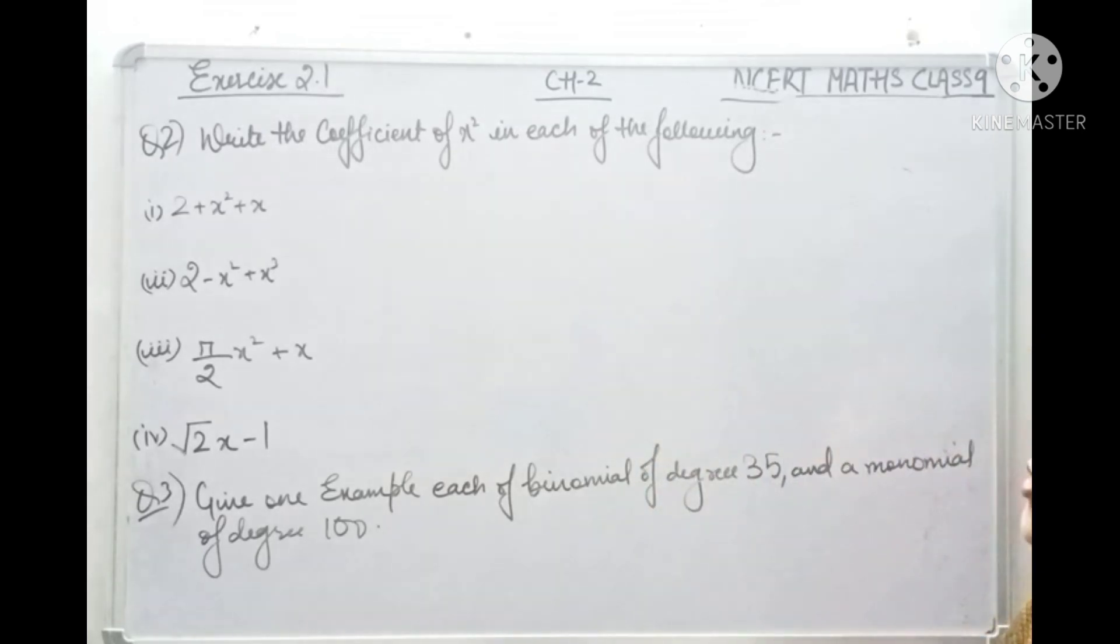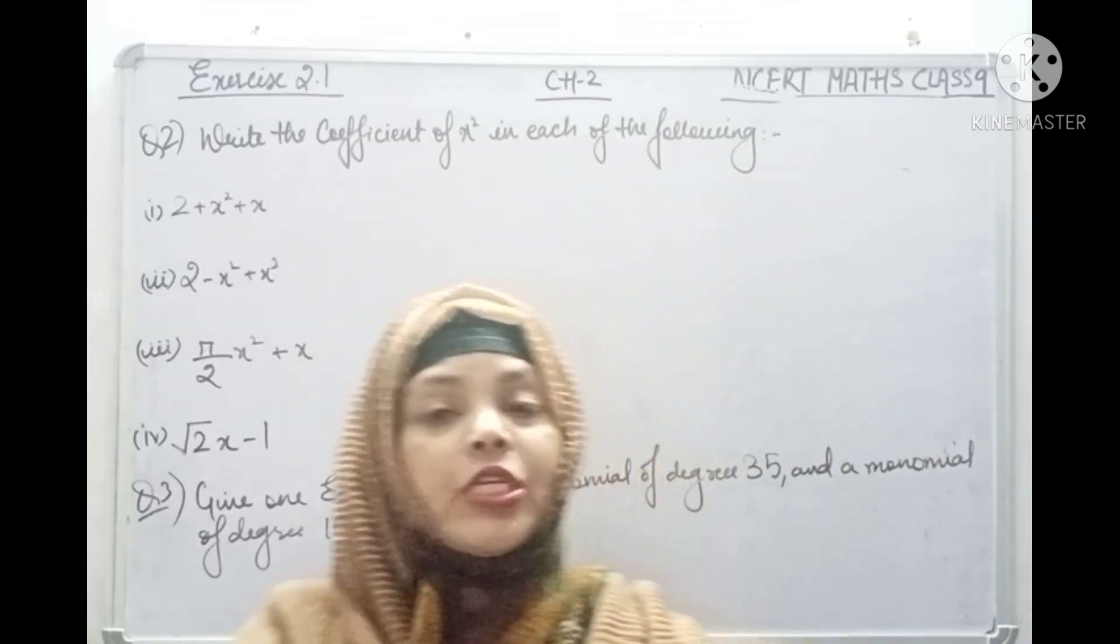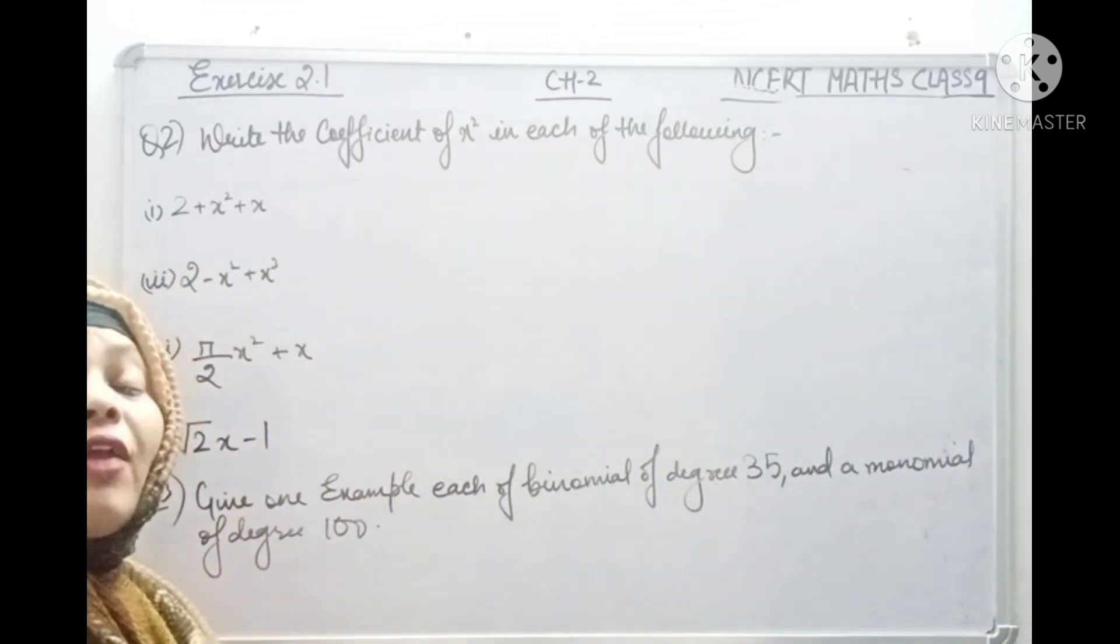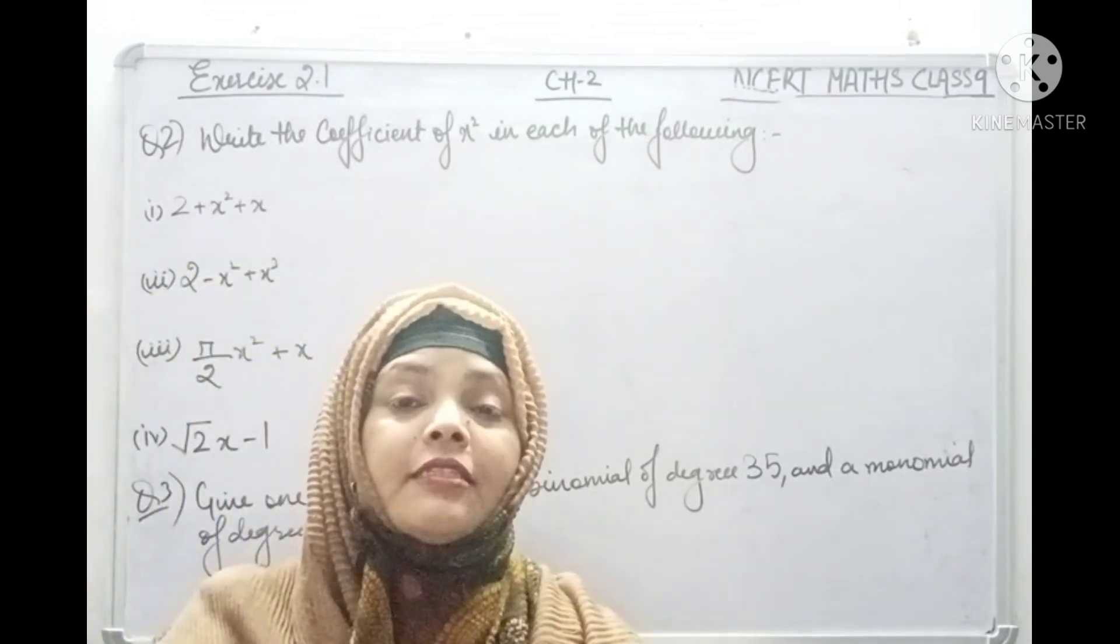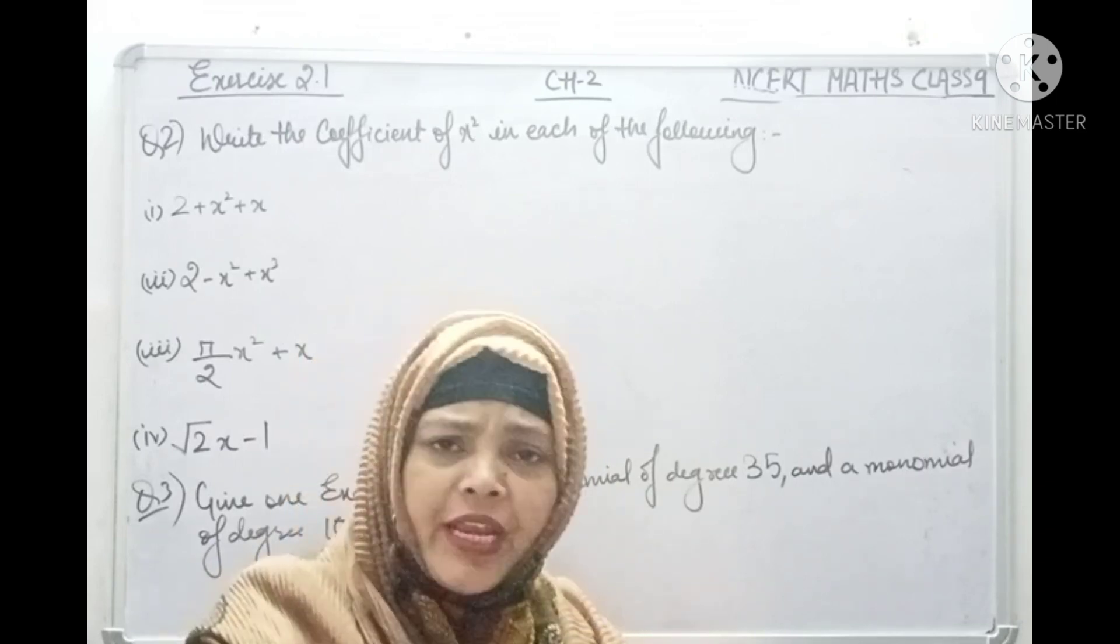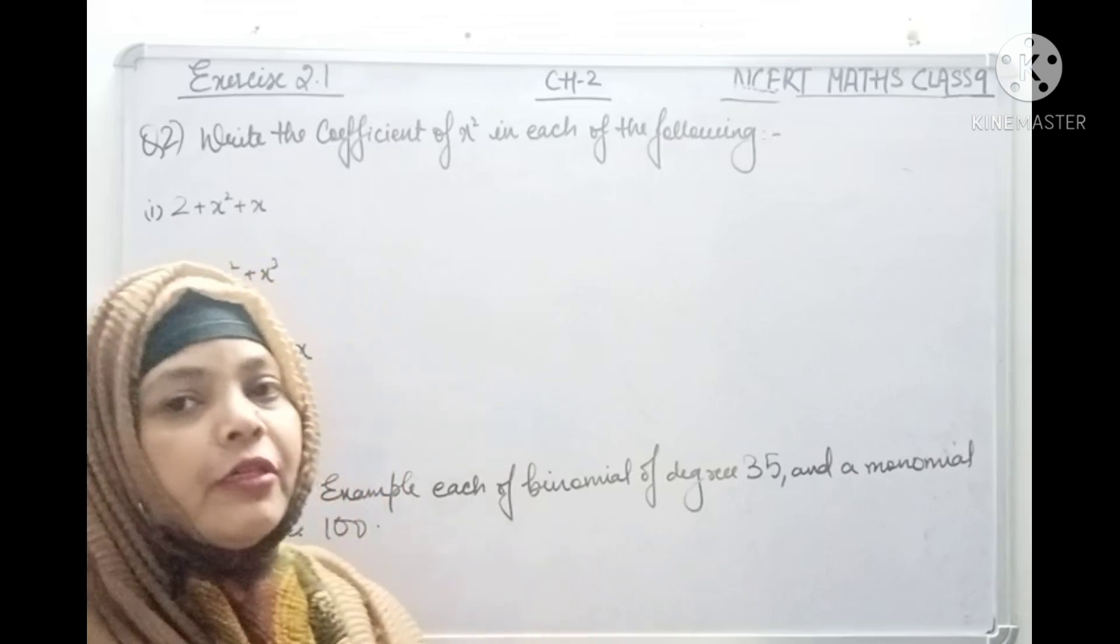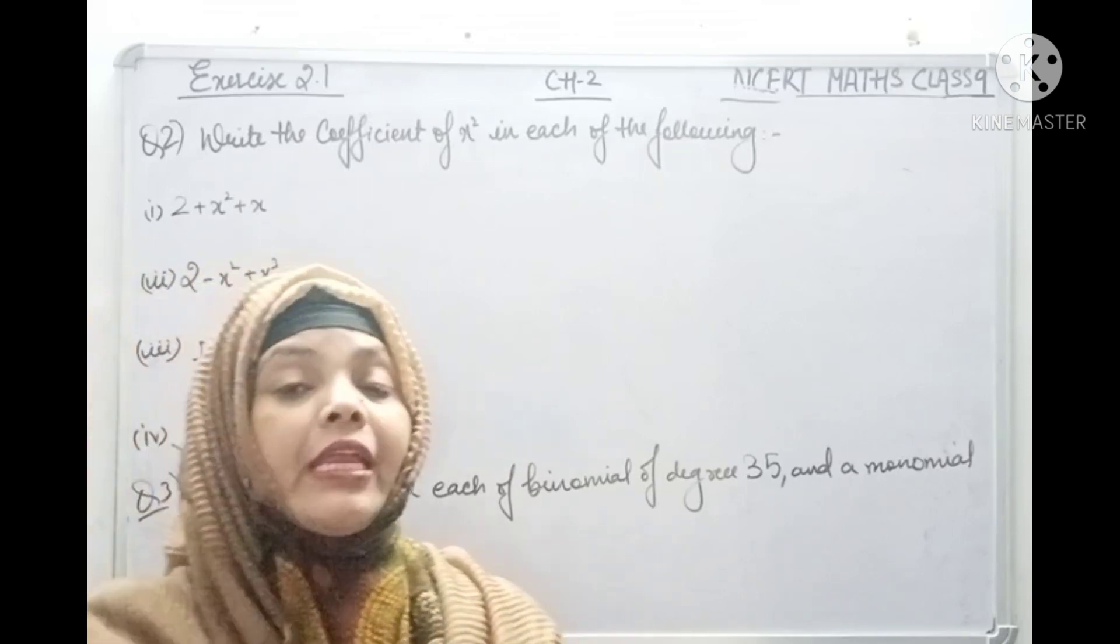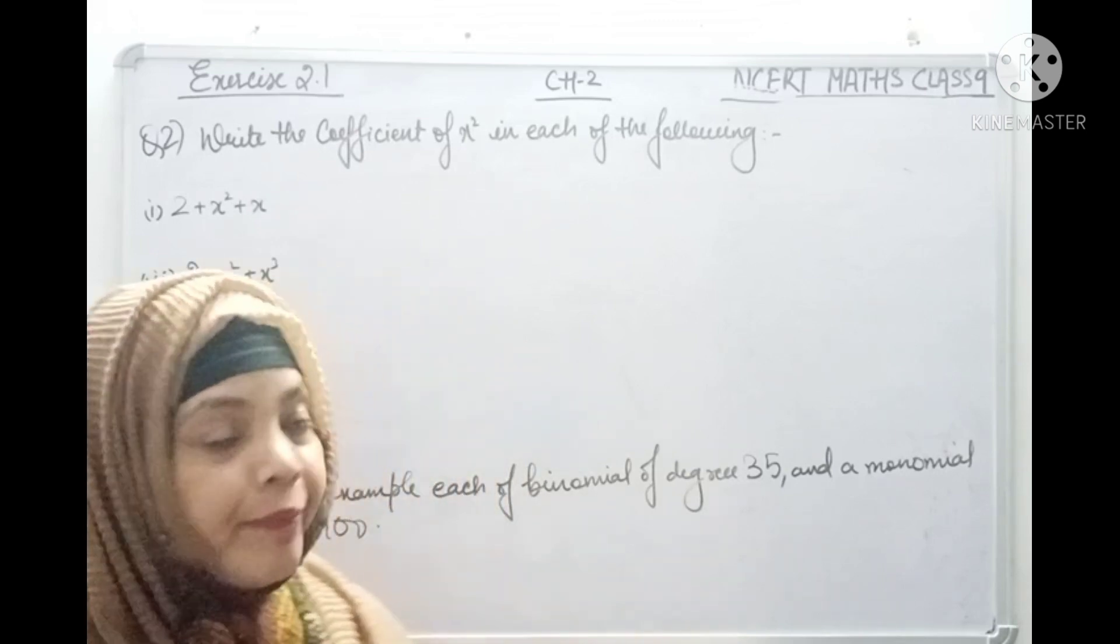Question number 2 is write the coefficient of x square in each of the following. In all these questions, we have to find the coefficient of x square. Coefficients are taught in my introduction class. That numerical factor of a variable is the coefficient. The number which is multiplied by variables is called the coefficient of a variable.